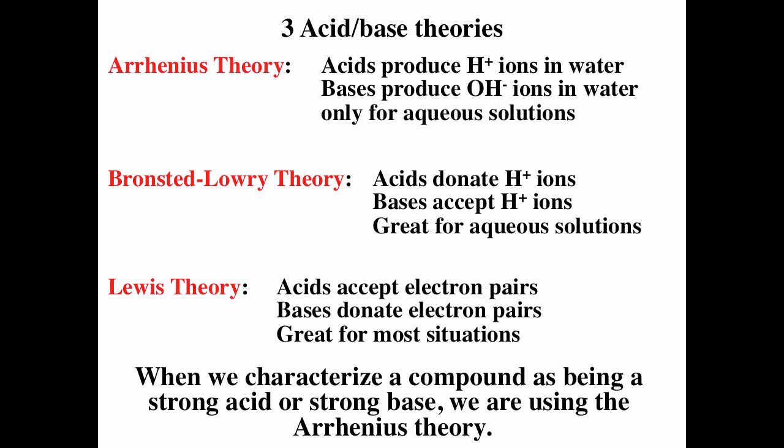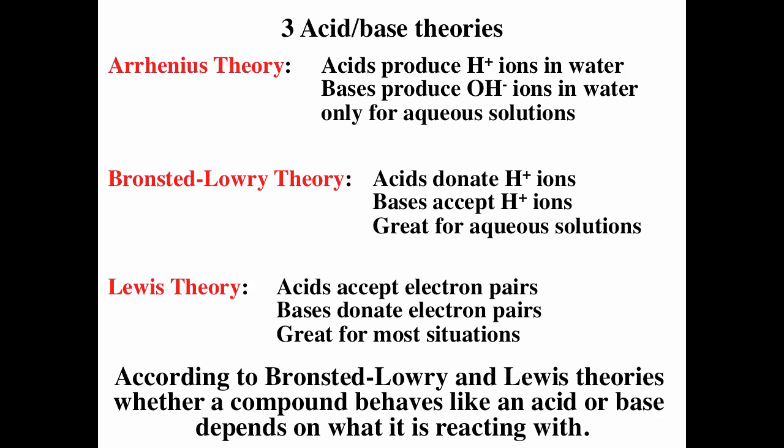The Bronsted-Lowry theory and Lewis theory are about how a compound is behaving in a reaction. If it accepts hydrogen ions, then it's behaving like a base. If it donates hydrogen ions, it's behaving like an acid. Lewis theory is more general — they're both consistent, but Lewis is more general. So all Bronsted-Lowry acids are Lewis acids, but not all Lewis acids are Bronsted-Lowry acids.